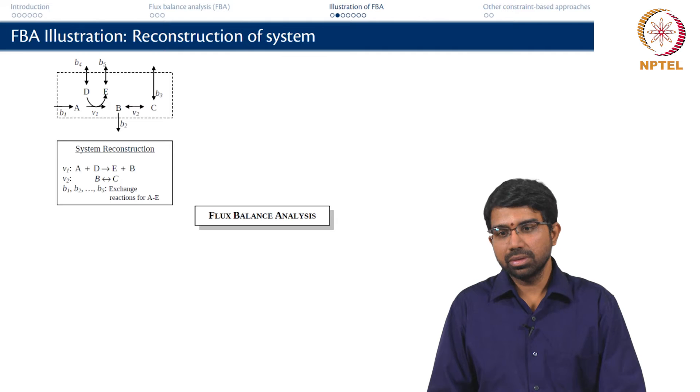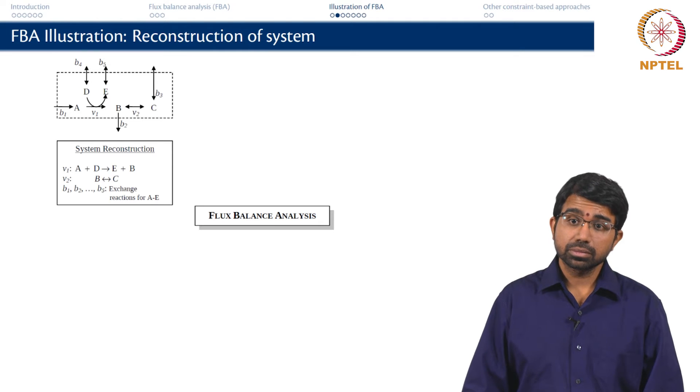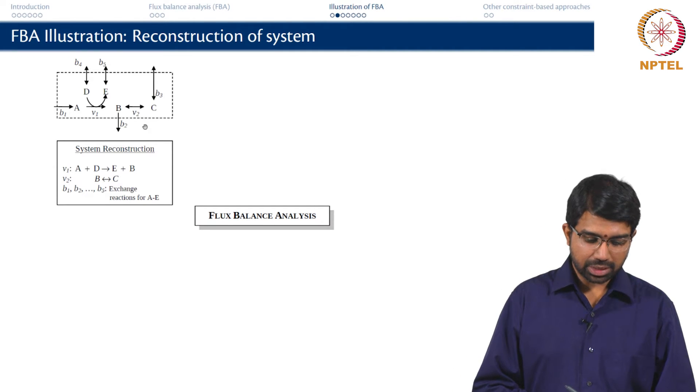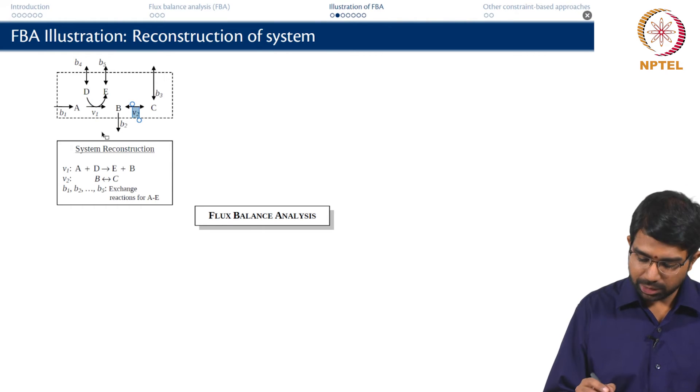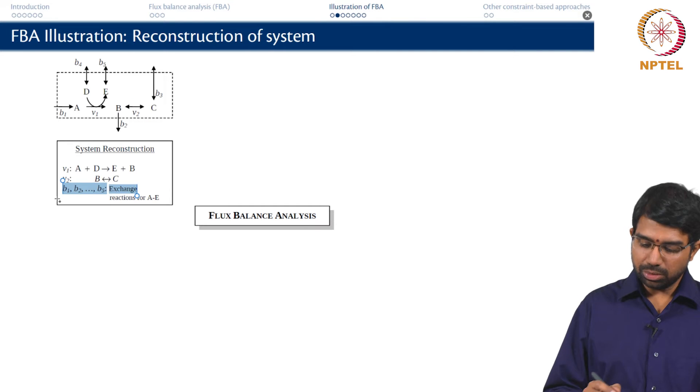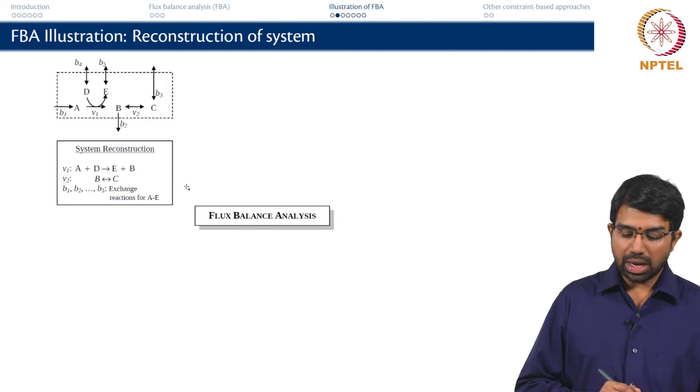Given this is your system, now how do you set up the next steps for flux balance analysis? So dx by dt equals S into V. What is your stoichiometric matrix? What is going to be the size of your stoichiometric matrix? What is M and what is R? M is 5, R is 8. This is one reaction, right. It is basically A plus D giving E plus B. This is how you normally write in biochemistry. So that makes it 7. So you have two internal reactions, V1 and V2 and you have a bunch of exchange reactions, V2 to V5.